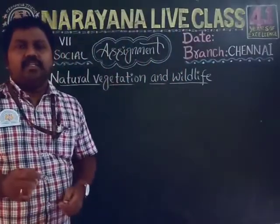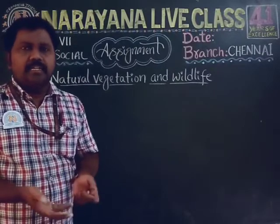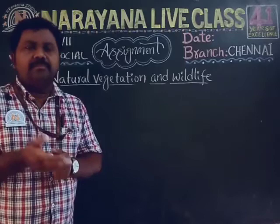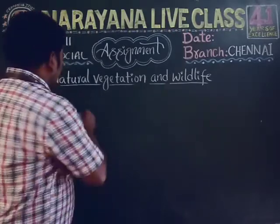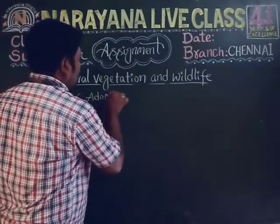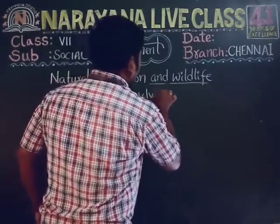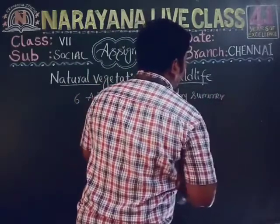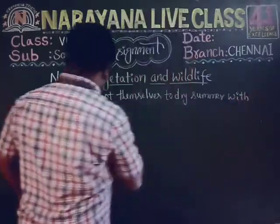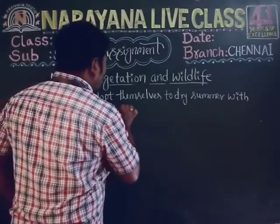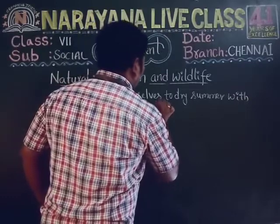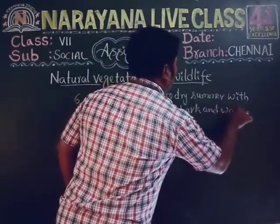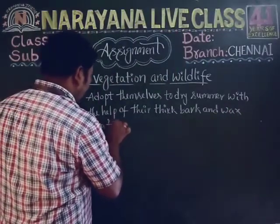The sixth question: what is special about Mediterranean trees? The answer is that Mediterranean trees adapt themselves to dry summers with the help of their thick bark and wax-coated leaves, which help them to reduce transpiration.